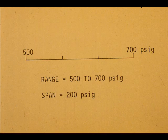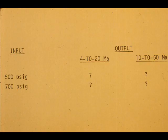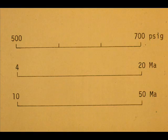Consider if the range of the transmitter is 500 to 700 PSIG instead of 0 to 200 PSIG. The range is different, but the span is still 200 PSIG. At 500 PSI input — the low end of the range — the output should be 4 or 10 milliamps depending on the output range selected. At 700 pounds, the output would be either 20 or 50 milliamps.